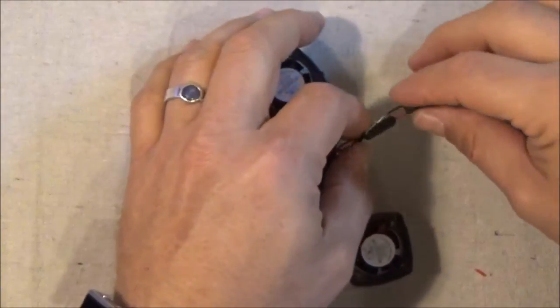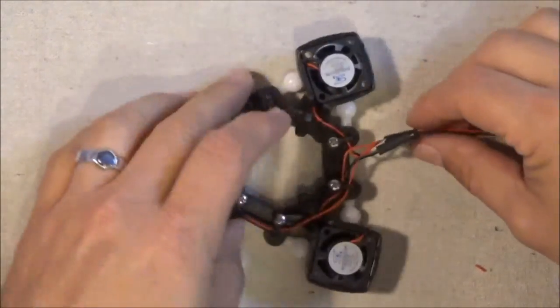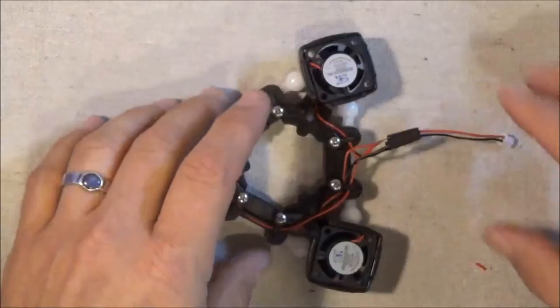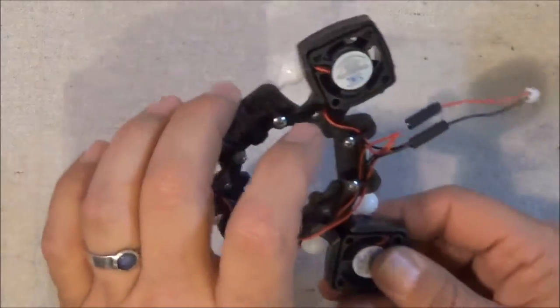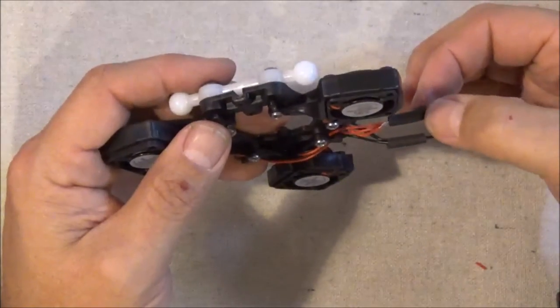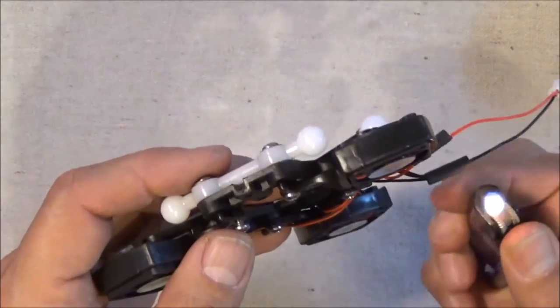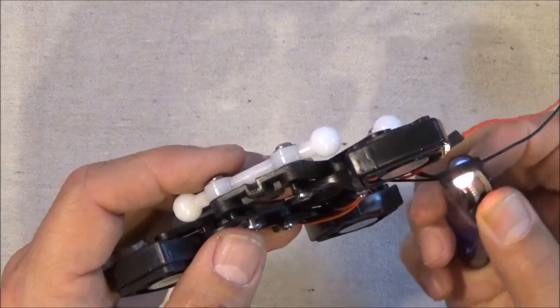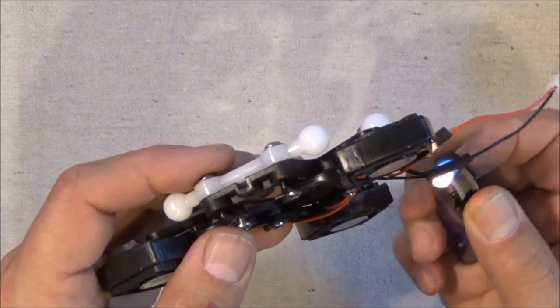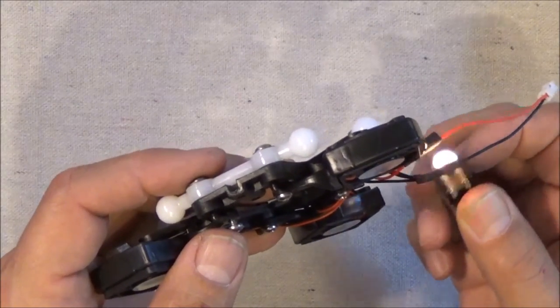We'll go ahead and slide our heat shrink up. Make sure it's in the right spot for both wires because we're going to do these at the same time. And using a lighter, it's going to go real quick.